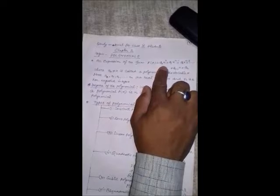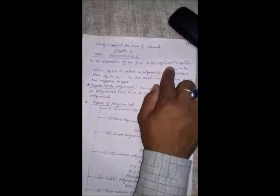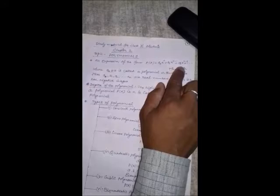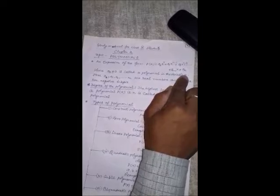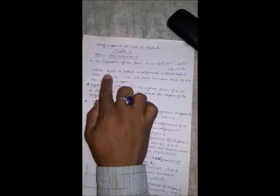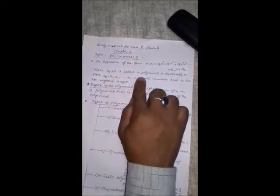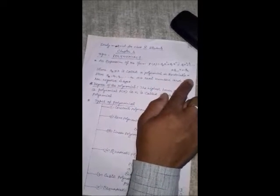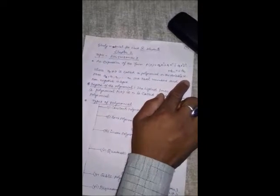An expression of the form a0x to the power n plus a1x to the power n minus 1 plus a2x to the power n minus 2 and so on. The power of x is in decreasing order where a0 is not equal to 0 is called a polynomial in the variable x of degree n.